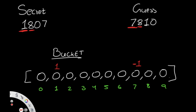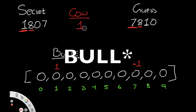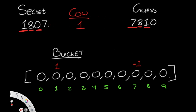Next, secret has 8 and guess has 8 — same digit and position, so it's a bull. We increment our bull count to 1. Then for secret 0 and guess 1: index 0 gets +1 (becoming 1), and index 1 gets -1. Since index 1 was 1, it becomes 0 — meaning both secret and guess contain the digit 1, just in different positions.